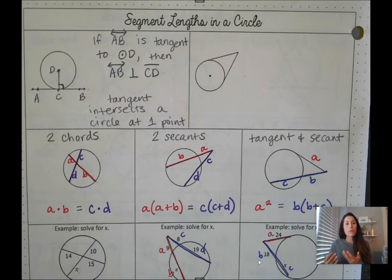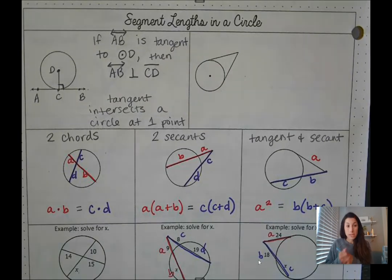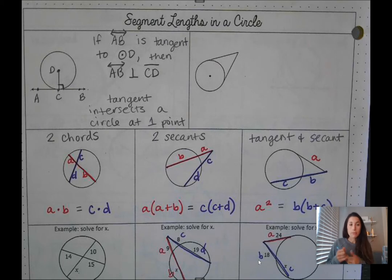When we're creating right angles and when you're working with segments that are tangent, you're going to be working with a lot of triangles as well, and we're going to be working with right triangle properties. So keep that in mind. You might see some sine, cosine, tangent, or you might see some Pythagorean theorem.